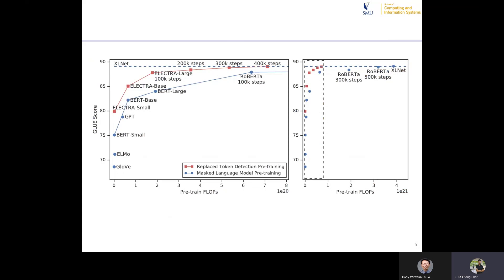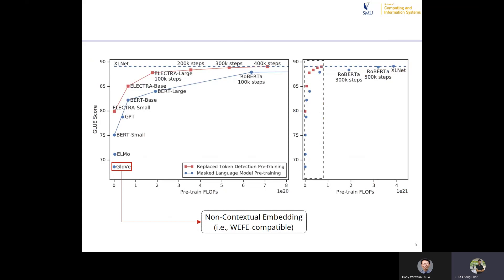This figure shows the relative performance of models on GLUE. The blue line shows masked language model pre-trained performance; the y-axis is the GLUE score and x-axis is FLOPs. ELECTRA, shown in red, generally performs better than pre-trained models at any given FLOP count. One interesting model is GloVe — a non-contextual embedding — which is the only one compatible with the REFER fairness evaluation, while the higher-performing contextual models cannot be compared on the BFE score.